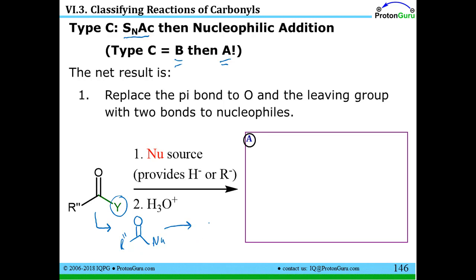So add that nucleophile and then protonate. What's the net result here? That was type B and that was type A. At the end I've got two nucleophiles attached to the carbon. So replace the pi bond and replace the leaving group, the Y. Replace both of those with two bonds to the nucleophile.